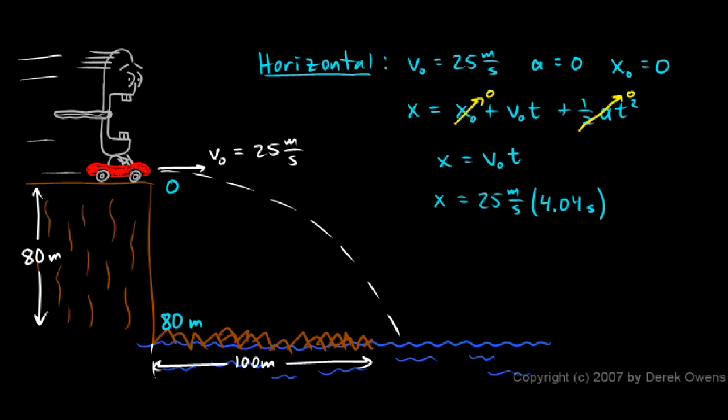We see the seconds cancel out here, leaving us with meters for our unit. And 25 times 4.04 comes out to be 101 meters. So he lands down here and just barely misses the jagged rocks. Although hitting the water at that speed isn't exactly going to be a safe thing to do, but at least he misses the rocks in this particular case.